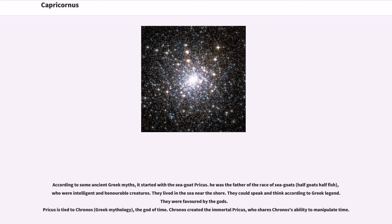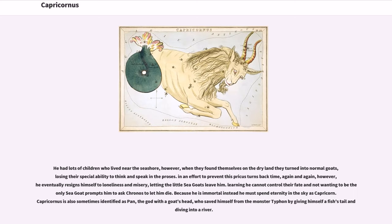According to some ancient Greek myths, it started with the sea goat Pricus. He was the father of the race of sea goats, half goats half fish, who were intelligent and honorable creatures. They lived in the sea near the shore. They could speak and think according to Greek legend. They were favored by the gods. Pricus is tied to Kronos, the god of time. Kronos created the immortal Pricus, who shares Kronos' ability to manipulate time. He had lots of children who lived near the seashore. However, when they found themselves on dry land they turned into normal goats, losing their special ability to think and speak in the process.